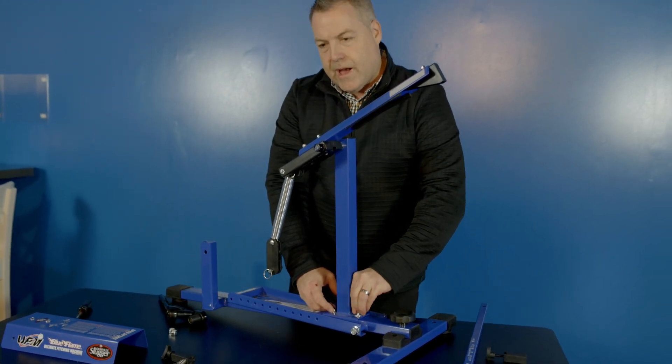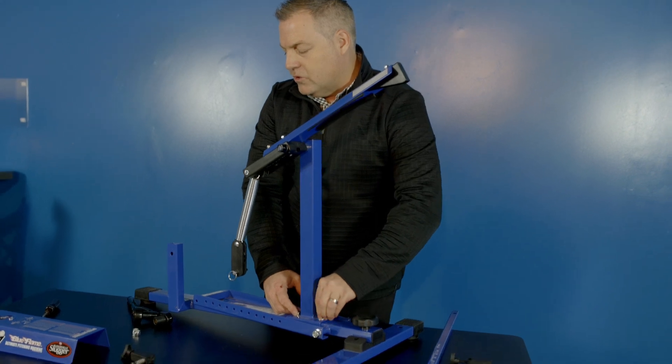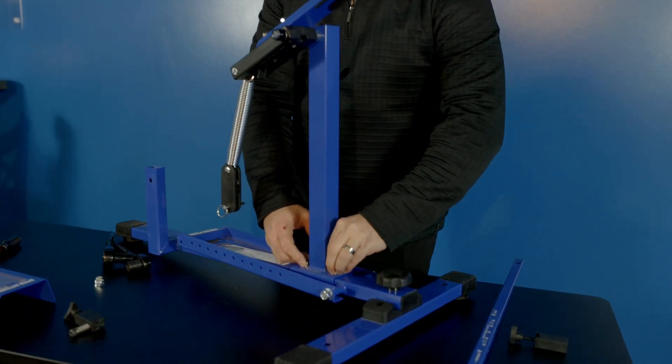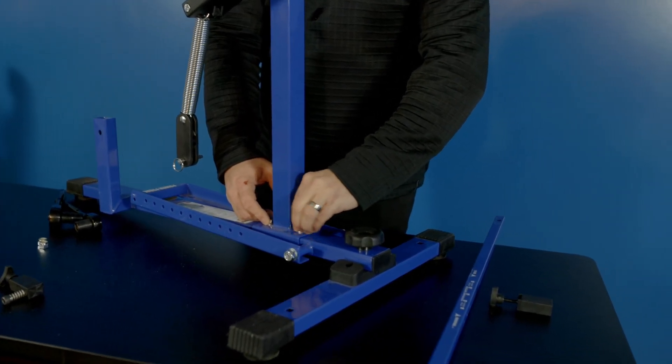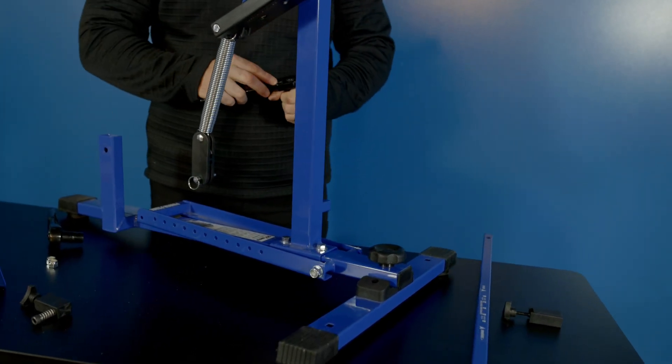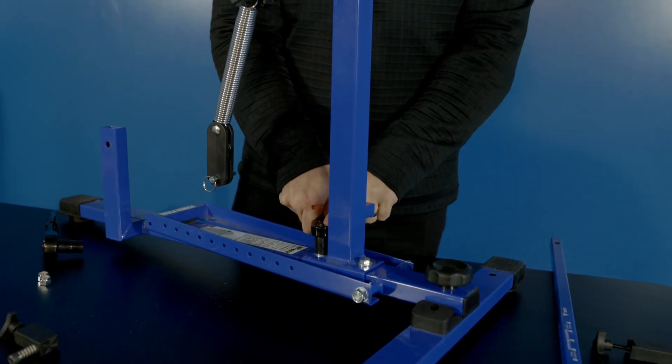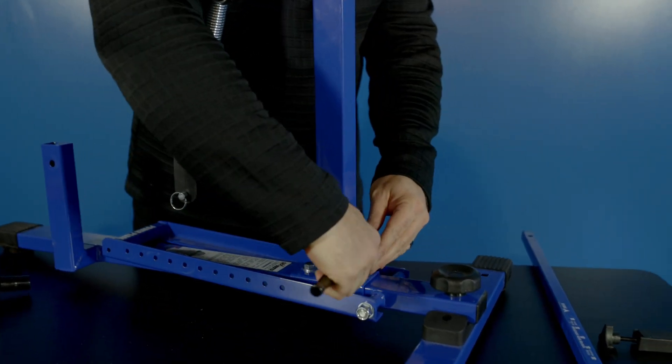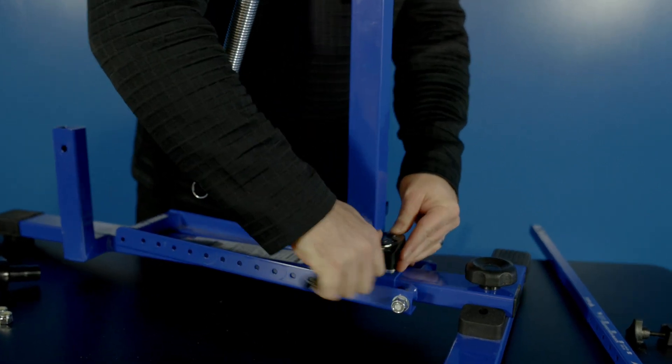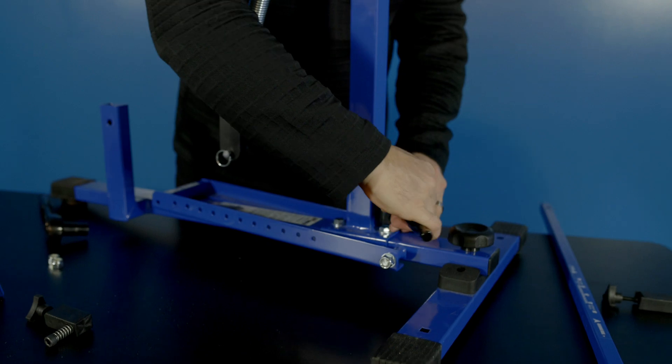And then once you have them hand tightened as far as you go, you just want to use a ratchet just to give it that extra little bit of tightening here. So I've got a couple of ratchets right here that I'm going to use, and I'm just going to tighten this on the front and back, just so those items are secured.